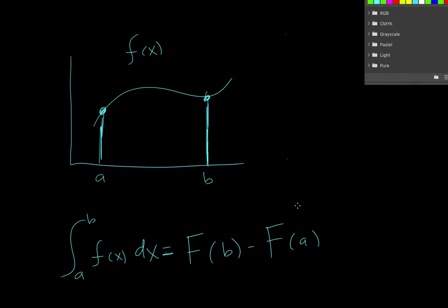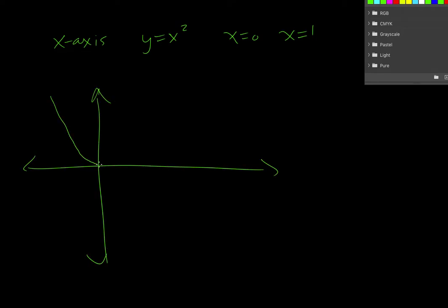And so they start us off with, we're bound by the x-axis, we're also bound by y equals x squared, and we're going to go from x equals zero to x equals one. Okay, so if we draw a graph of this it's a parabola.